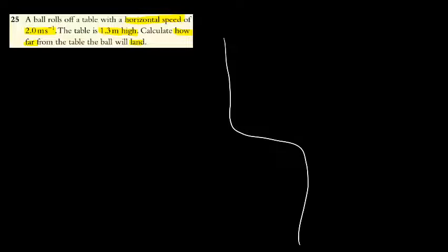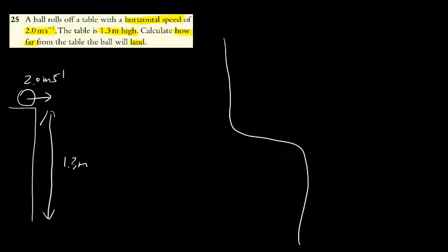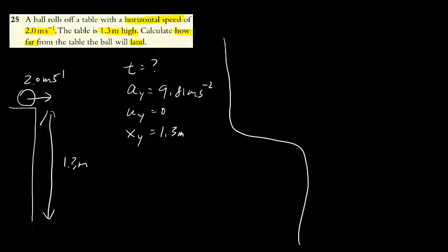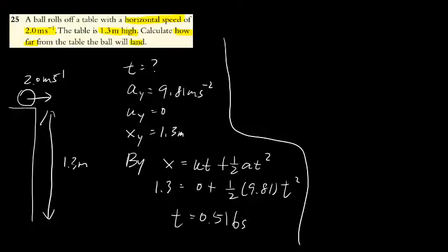So first of all, after looking at the question, you can draw this diagram roughly. This helps you to understand the situation. After that, you should write down all the information you know. Here you want to find the time first, because this helps you determine how long the motion would be. The most suitable equation should be x equals ut plus one-half at squared, and then you find the time of flight, which is very important.